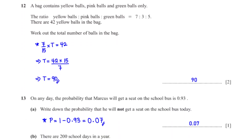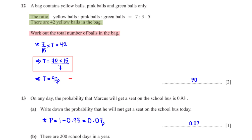A bag contains yellow, pink, and green balls only. The ratio yellow : pink : green = 7 : 3 : 5. There are 42 yellow balls. The ratio share for yellow is 7/15, so (7/15) × T = 42. Making T the subject gives a total of 90 balls in the bag.